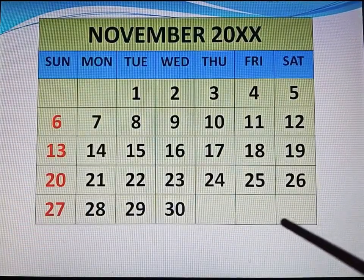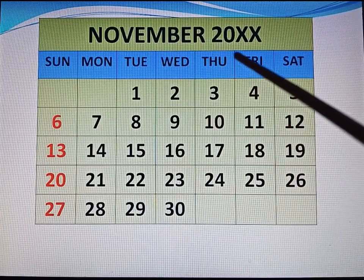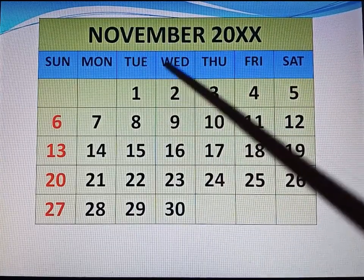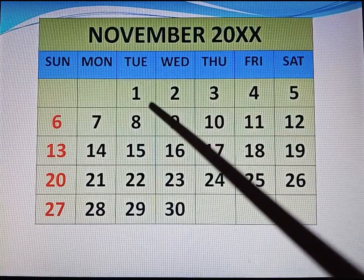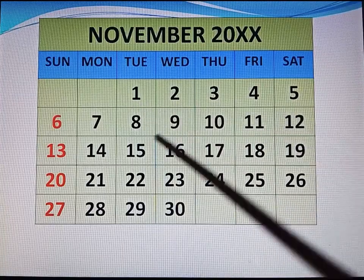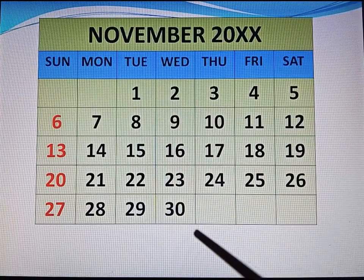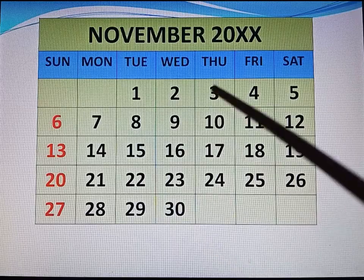We are given a calendar for November month. Dates are arranged 1 to 30. There are 30 days in November.